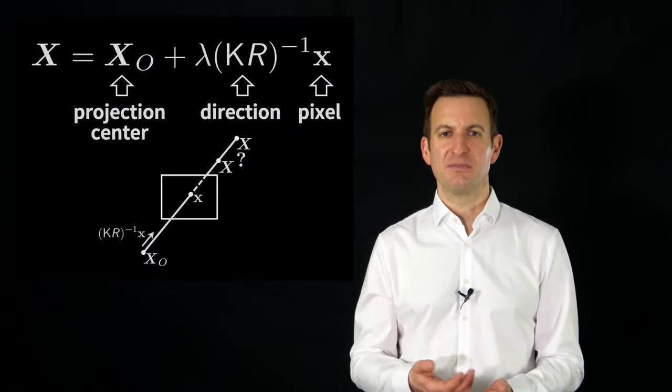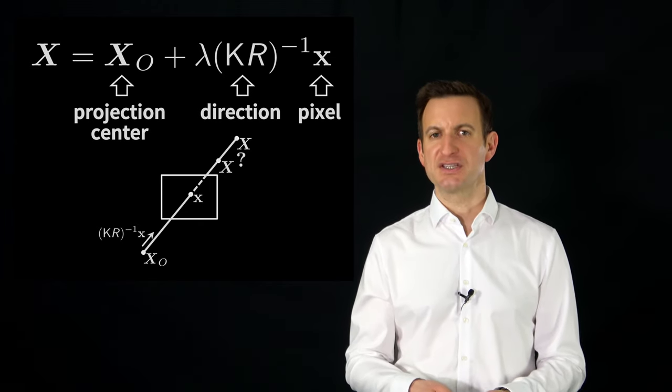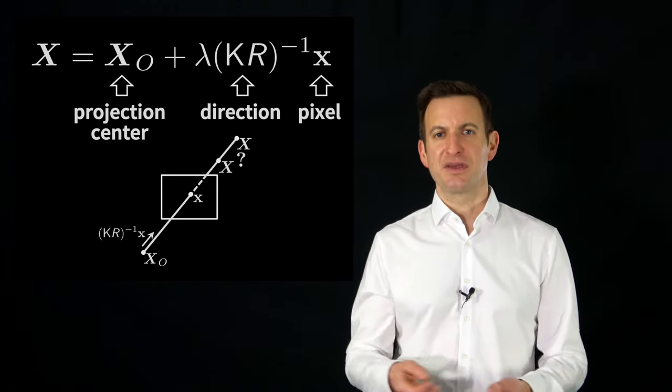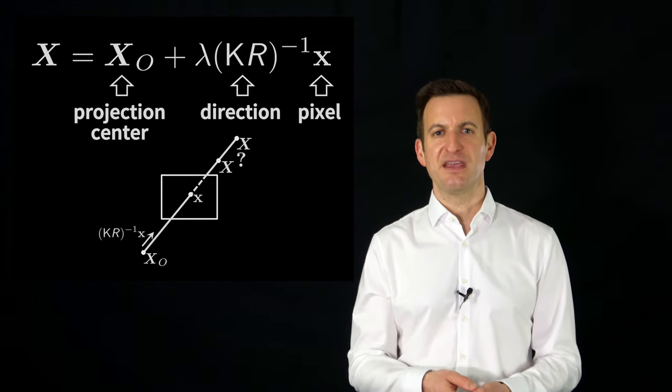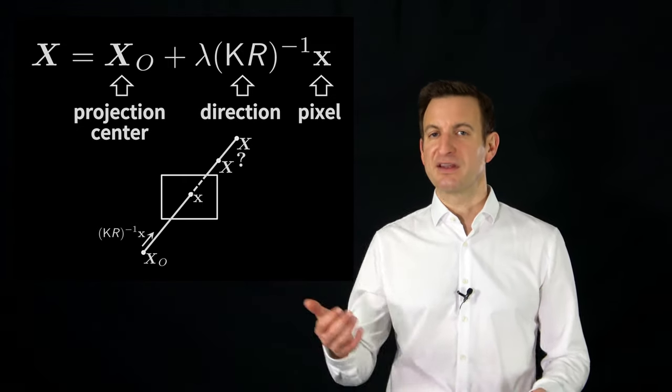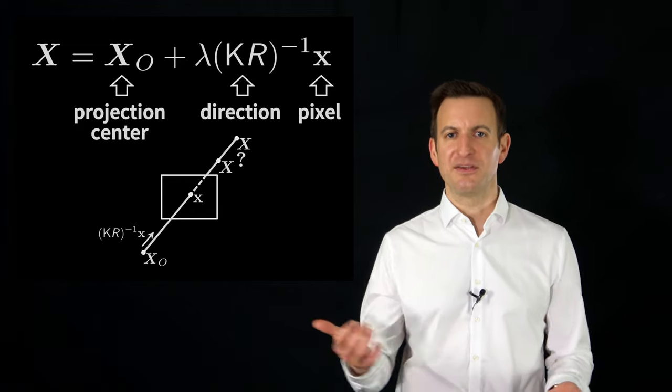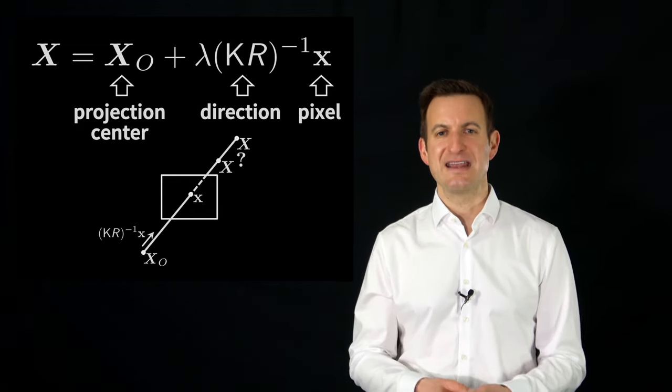So I cannot fully invert this mapping, but I can partially invert in the sense that I have a 1D solution space. And this 1D solution space can be expressed as a straight line starting in x0, the projection center, and then through the calibration matrix, the rotation matrix and the inverse, we can have basically a direction vector in space, and we know that this point lies somewhere on that straight line.